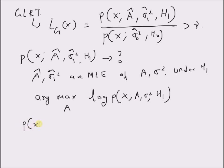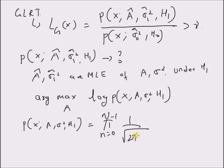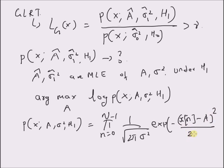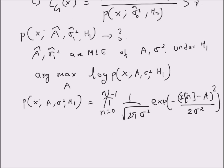The probability distribution of x with parameters A and sigma squared under the alternate hypothesis is given by the product from n = 0 to N−1 of (1 / sqrt(2π σ²)) × exp(−(x(n) − A)² / (2σ²)). By maximizing this distribution, or the logarithm of it, we can determine the maximum likelihood estimates of A and sigma squared.